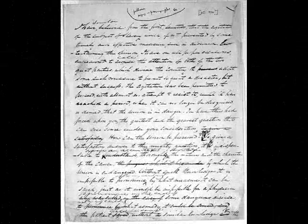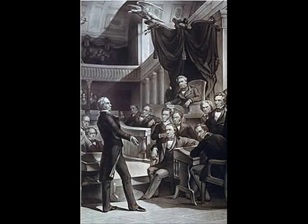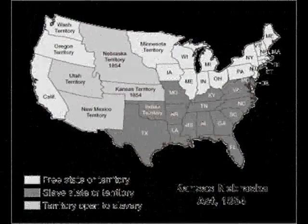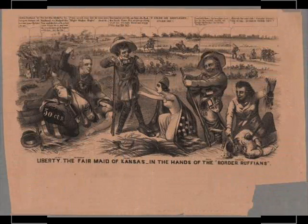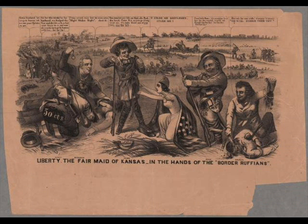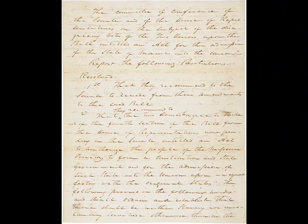The Kansas-Nebraska Act of 1854 created the territories of Kansas and Nebraska, opened new lands, removed the Missouri Compromise of 1820, and allowed the settlers to decide whether or not to have slavery within those territories.